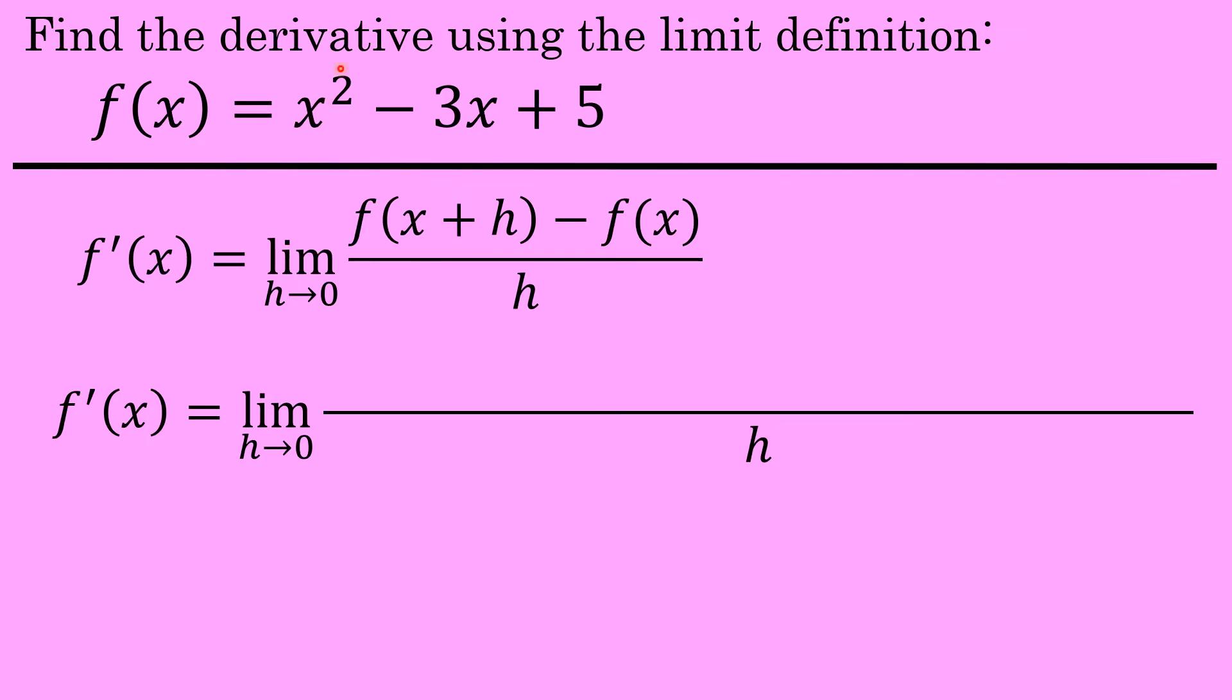So that means the first term of the original function, x squared, will become x plus h squared when evaluating f of x plus h. The second term in the original function is minus 3x, so the next term in the limit definition will be minus 3, not times x, but times x plus h.